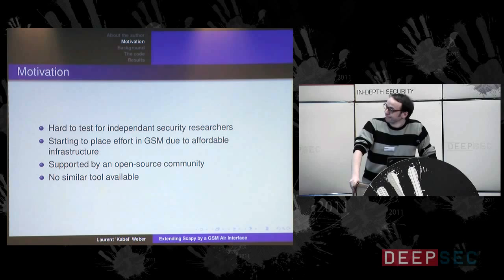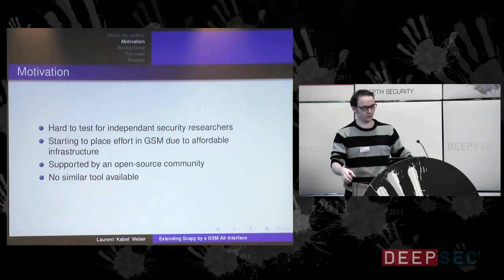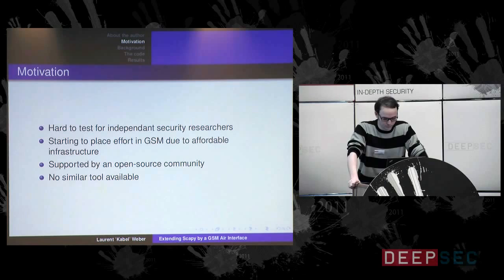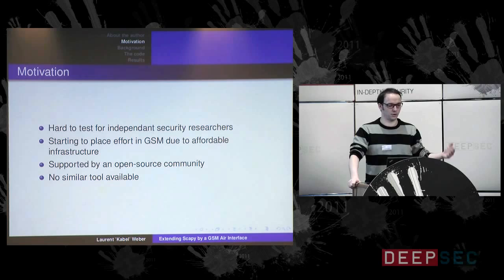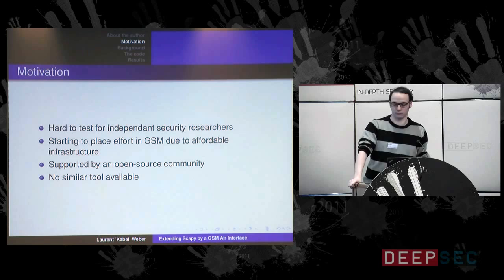The motivation of this talk: until now it was really hard for independent security researchers to dig into the security of GSM networks, even if it's very old technology. The prices were too high for independent people. But this has changed, because due to tools like the USRP it's now really possible for everybody to play with this network. A USRP costs around 2000 euros and you can basically do everything you want — and it's not the only hardware device. There are plenty others, like nano-BTS and femtocells.